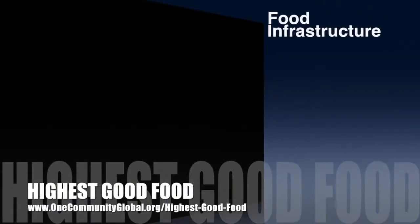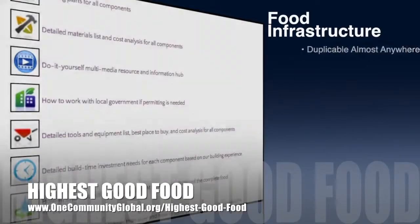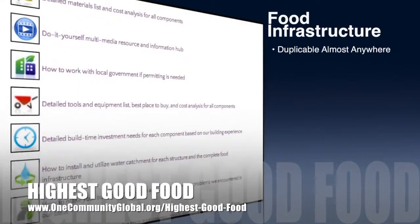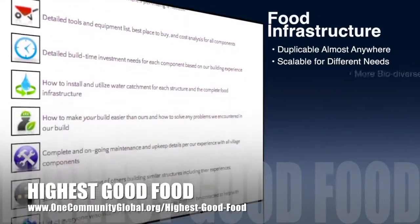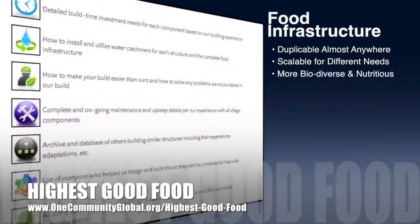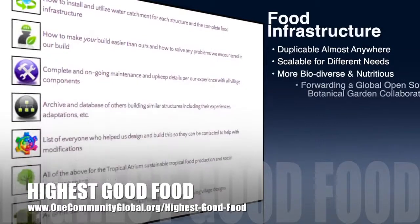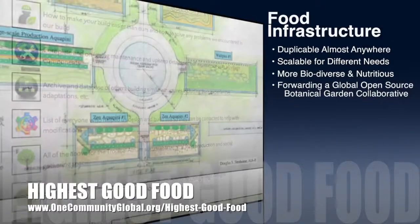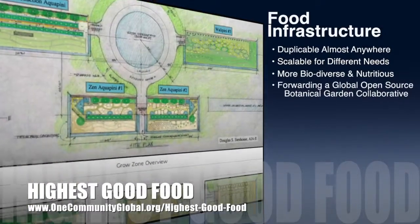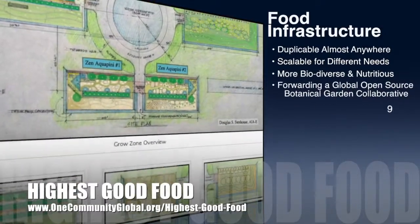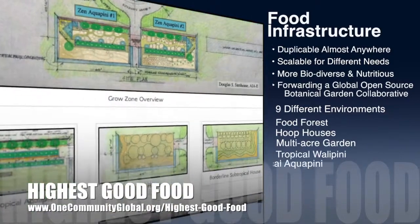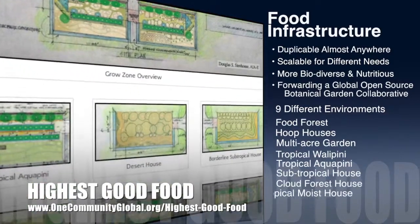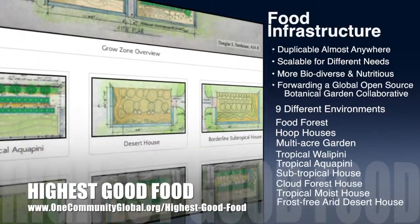OneCommunity's approach to highest good food is duplicable almost anywhere, scalable for different needs, more biodiverse and nutritious, part of forwarding a global open source botanical garden collaborative, and includes nine different free shared and duplicable growing environments.